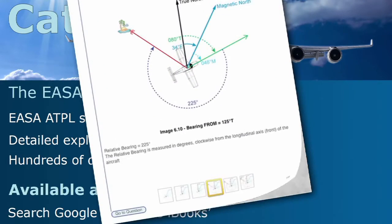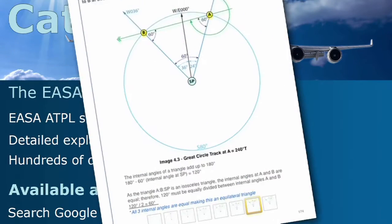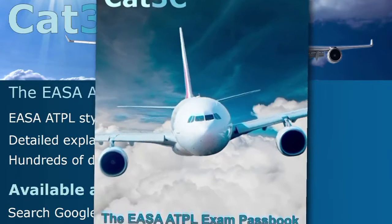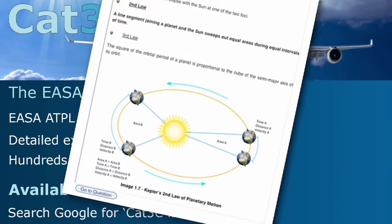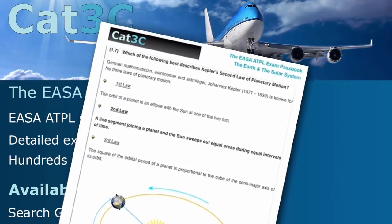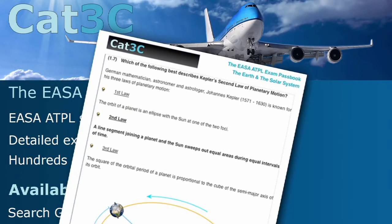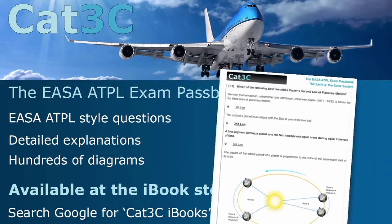The passbooks contain hundreds of exam-style questions and are supported by clear, in-depth explanations and interactive diagrams. The link to the iBooks can be found on the webpage below or at the Cat3C website at the Bookstore tab.